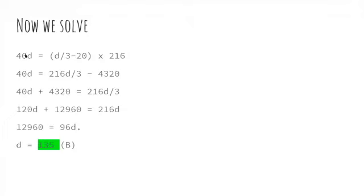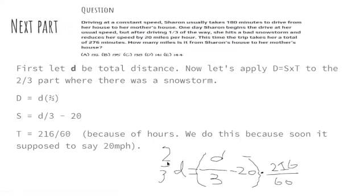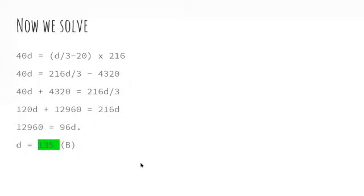So first here we times 60 to both sides. So basically here there was two thirds d times 60 equals 120 over 3 which also equals 40d. Now 40d is equal to 216d divided by 3 minus 4,320, because we used distributive.